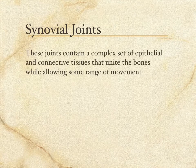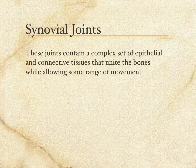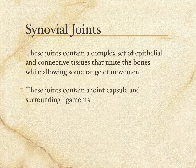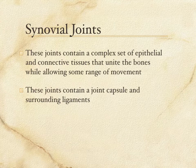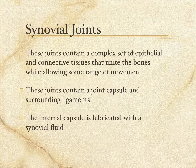As I just said, these joints contain a complex set of epithelial and connective tissues that hold the bones together and still allow a range of motion. These joints contain the capsule and the surrounding ligaments — ligaments being bands of connective tissue that hold the bone together — and that internal capsule where the surfaces are lubricated with what we call synovial fluid.